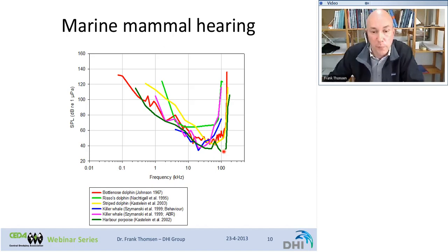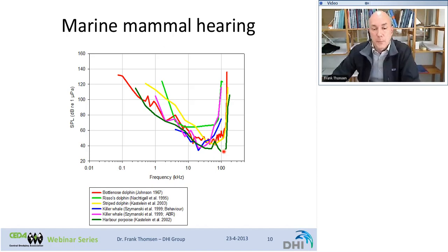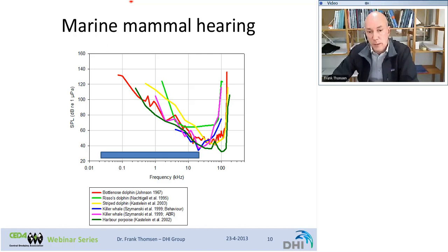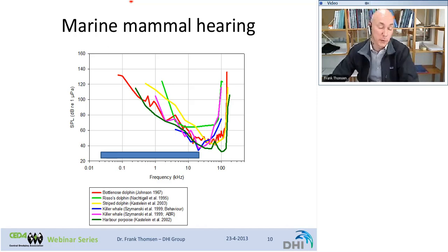If you compare that to our hearing range — 20 hertz to 20 kilohertz — it's a very restricted range compared to marine mammals. Marine mammals hear much better at higher frequencies and have a much broader bandwidth. So porpoises produce echolocation clicks at very high frequencies, and they are correspondingly very sensitive there.